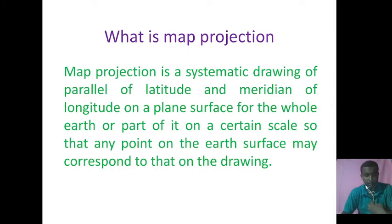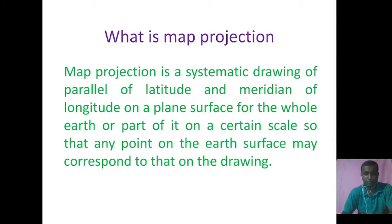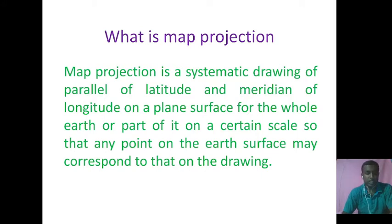This involves the application of a set of principles, procedures and purposes. Broadly speaking, map projection is defined as the systematic drawing of a network of parallels and meridians on a plane sheet of paper portraying a part or whole of the earth's surface. It is scale dependent and is done in accordance with a set of geometric and mathematical principles to satisfy certain objectives of the users.